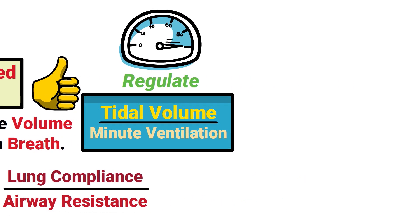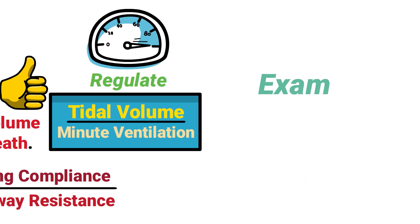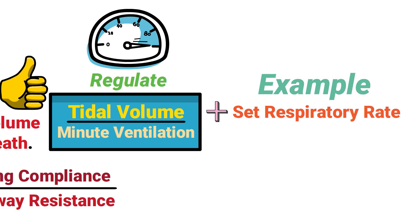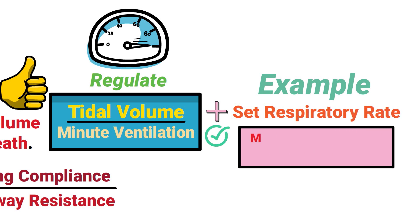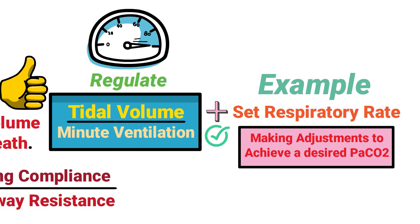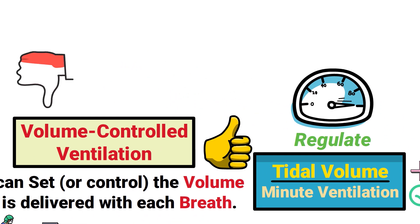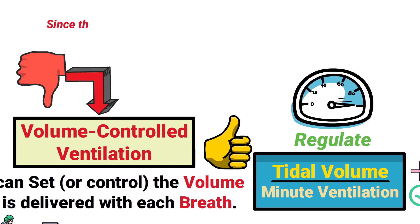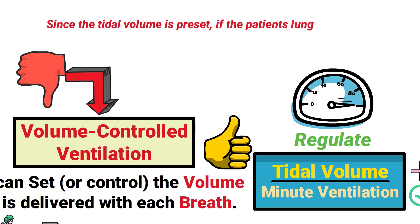For example, with a set tidal volume and a set respiratory rate, there is a known minute ventilation. This is beneficial when making adjustments to achieve a desired PaCO2. One of the negative aspects of volume controlled ventilation is that since the tidal volume is preset, if the patient's lung compliance were to decrease, this could result in high peak pressures and alveolar overdistension.